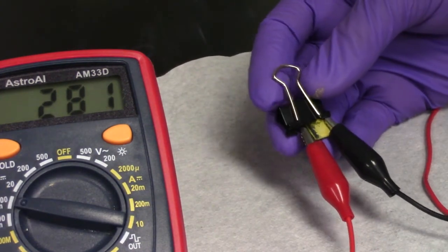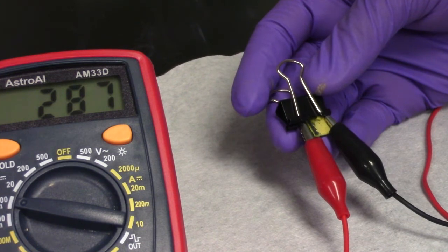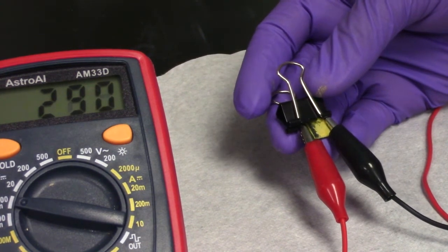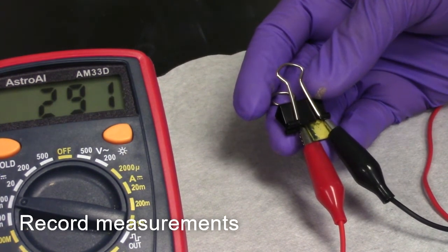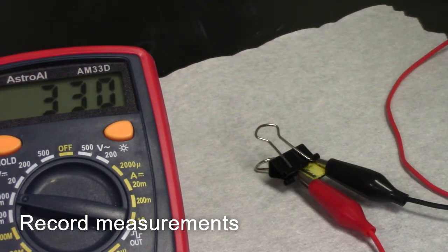When attached correctly, you should begin immediately to see a voltage reading. If you have a negative voltage reading, that can indicate that the anode and cathode connections have been switched. Peak values and stabilizing values should be recorded.